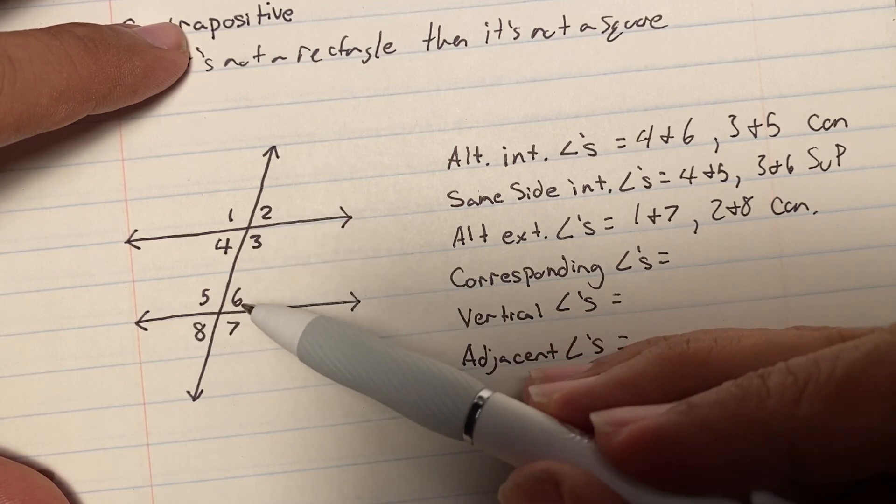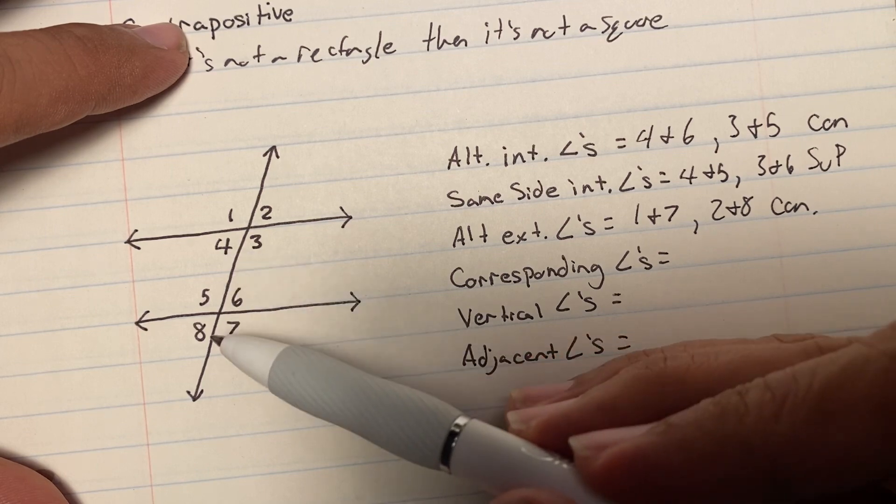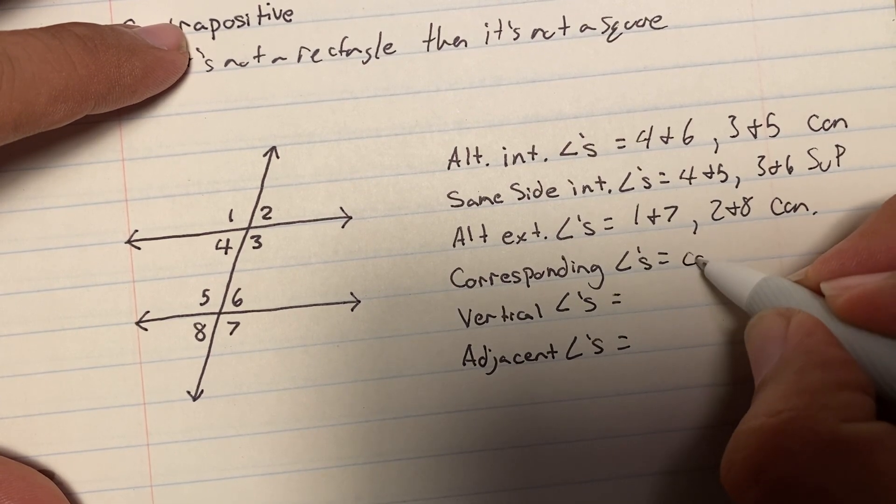2 goes with the 6, the 3 goes with the 7, and the 4 goes with the 8. I don't want to write all those down, but those are the corresponding angles. And corresponding angles are also congruent.